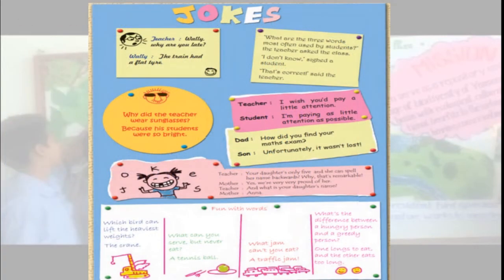Students, here we will go through some wall magazines, because you are also going to make a wall magazine for your class. See here, this is a Jokes Corner. One I will read for you: Dad, how did you find your math exam? Son answered: unfortunately it wasn't lost. So nice! So many jokes you can see here.